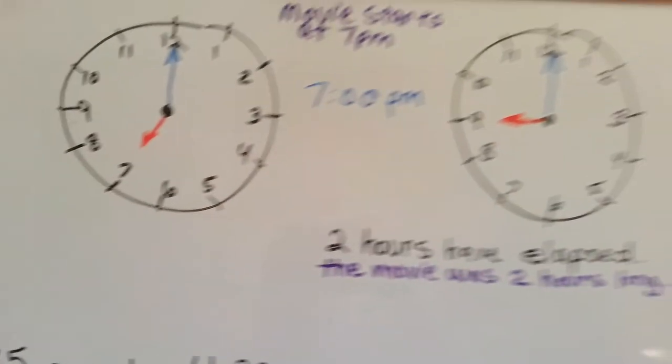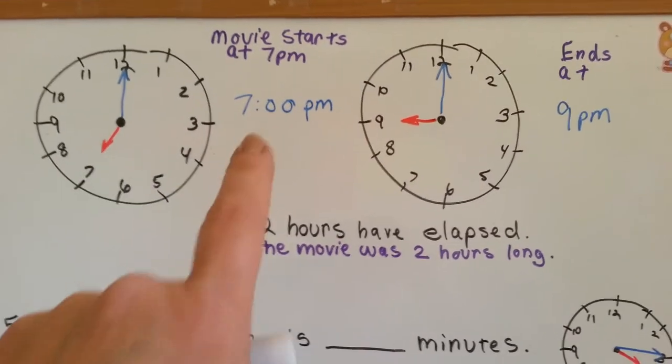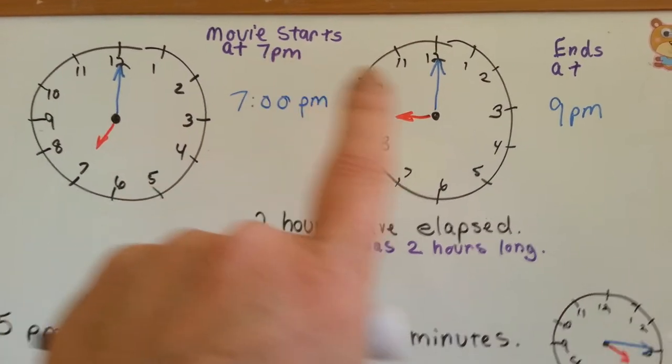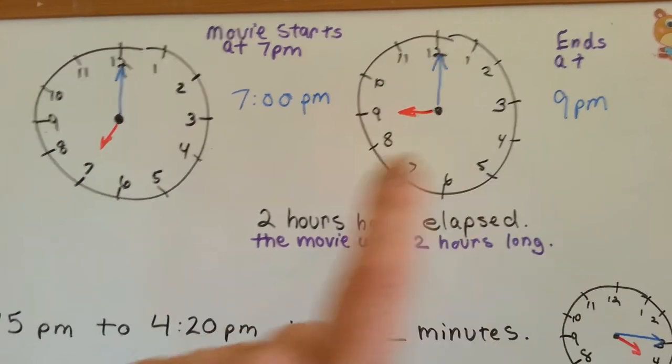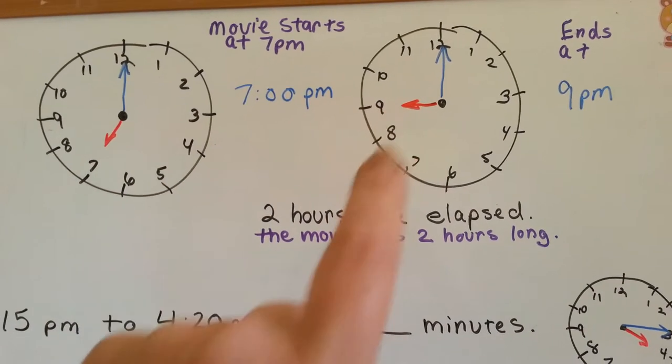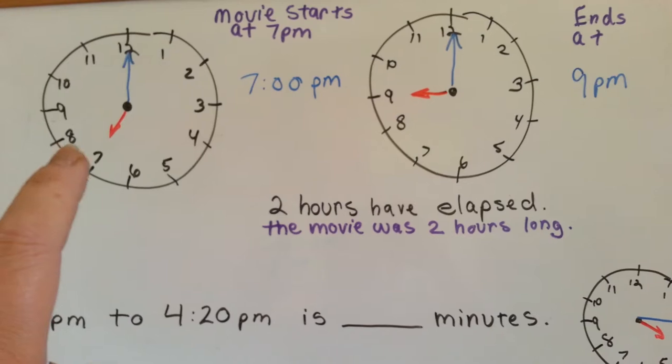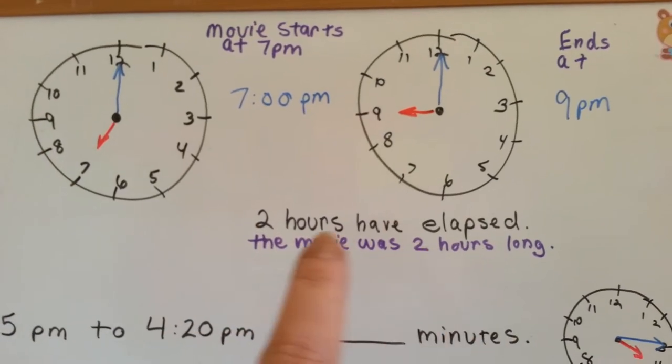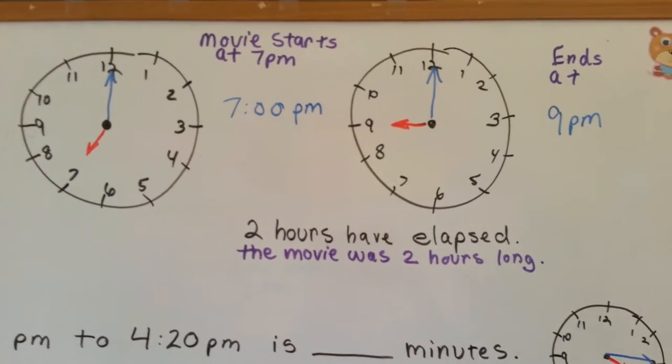Let's take a look at this. You went to a movie that started at 7 p.m. and ended at 9 p.m. 7, 8, 9 p.m. Two hours have elapsed. The movie was two hours long. See how that works?